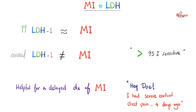CKMB returns to normal after about 2 to 3 days, so it wouldn't help at 4 days. Troponin I returns to normal after 10 to 14 days, but troponins can be elevated in chronic renal failure, heart failure, myopericarditis, pulmonary embolism, cardiac trauma, and sepsis. That's why LDH is also helpful — the more clues you have about a patient's case, the better.